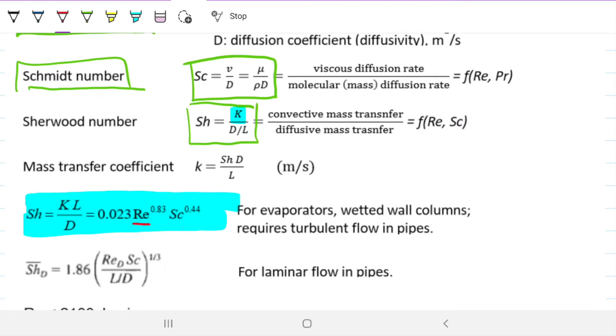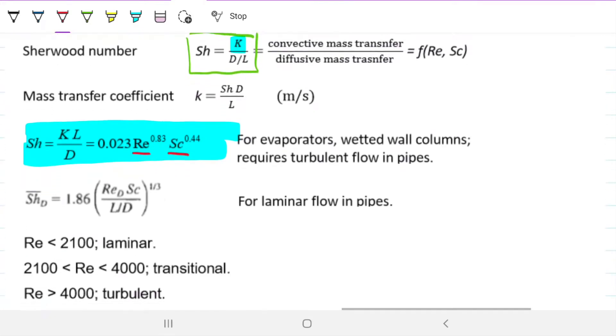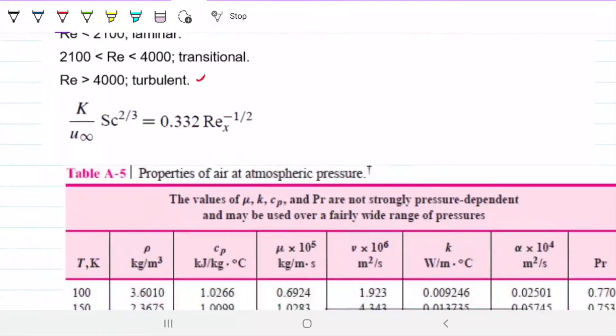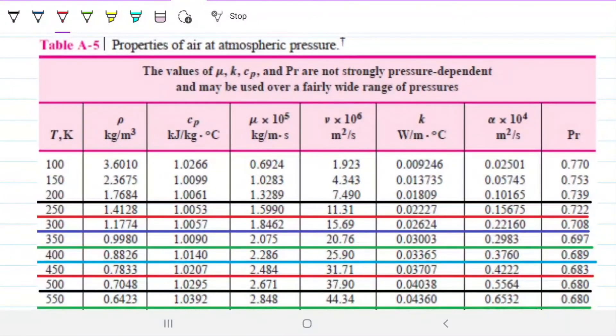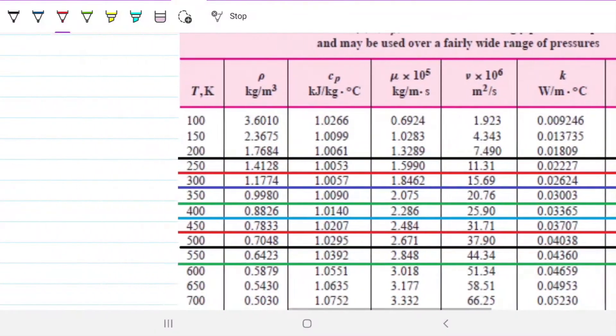And a turbulent scenario. So this is exactly what we're looking for. This is the relationship we're going to be using to be able to find Sherwood. And as you can see, we're going to need Reynolds and Schmidt's for that. Turbulent is considered if Reynolds is above 4,000. So this requires turbulent flow. So we need Reynolds to be above 4,000 to be able to use it. We need to check that as we're doing it.